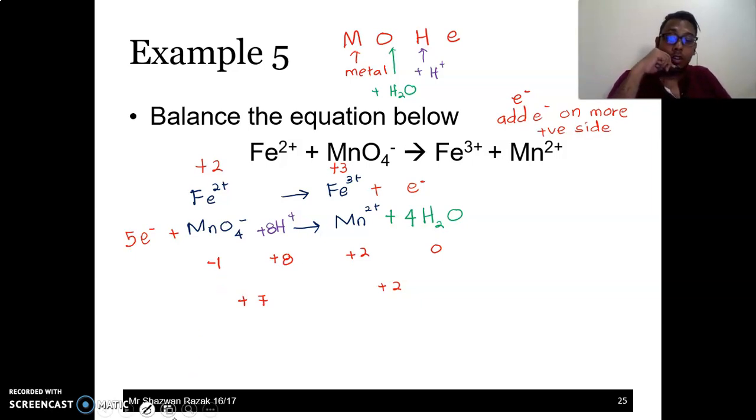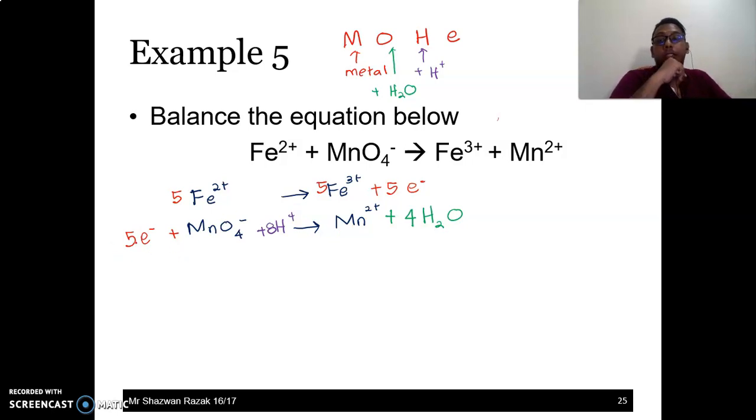Alright. Can you follow up to this point? So the next thing we will have to do now is we will combine. We tidy up a bit. Now, when we want to combine, we must equalize the number of electrons. Below there are 5. Above must also have 5. So everything has to be multiplied by 5. So 5. Now, if it's on the opposite side, we cancel. Cancel. Then, is there anything else we can cancel? There isn't, right?